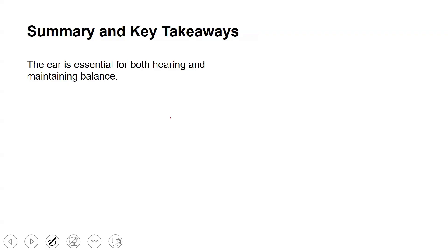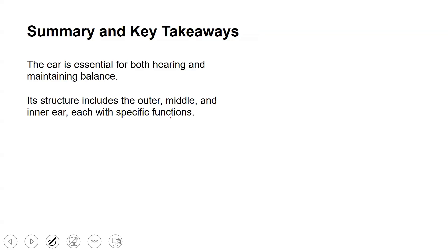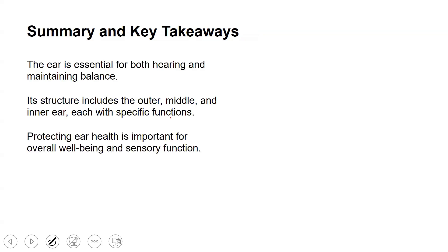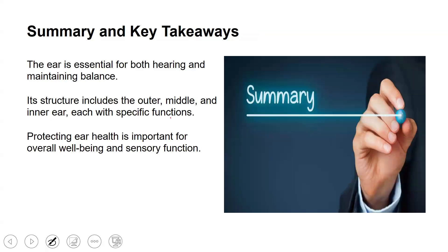Summary and key takeaways: the ear is essential for both hearing and maintaining balance. Its structures include the outer, middle, and inner ear, each with specific functions. Protecting ear health is important for overall well-being and sensory function.